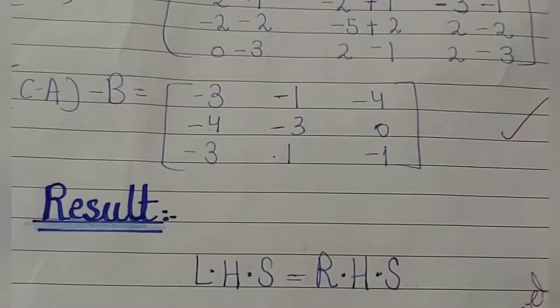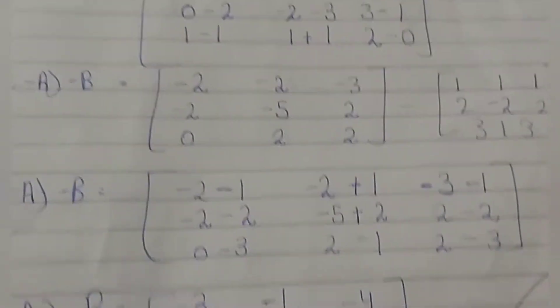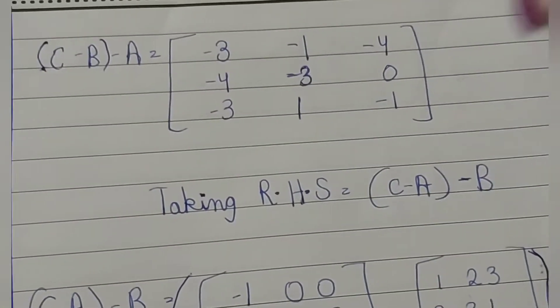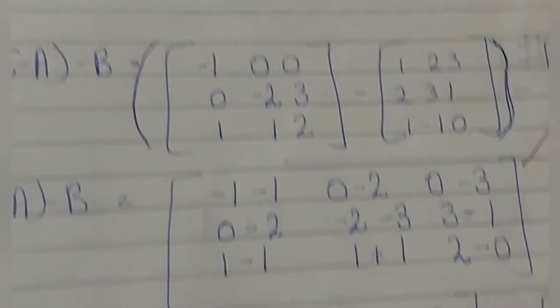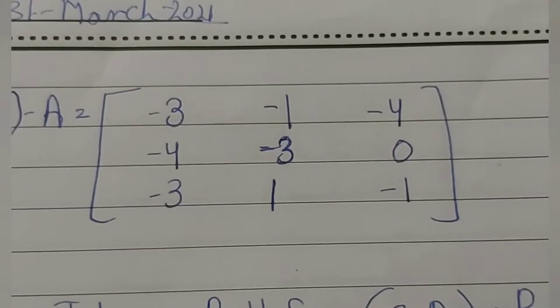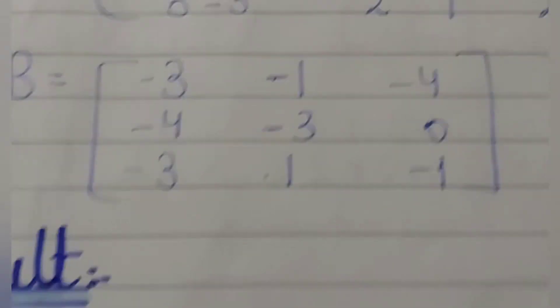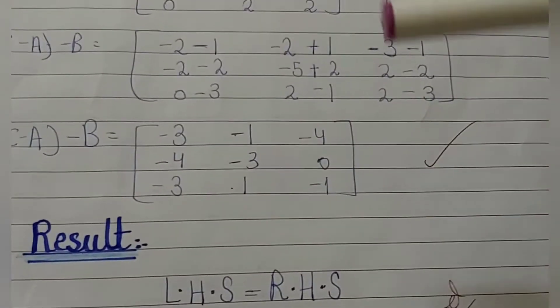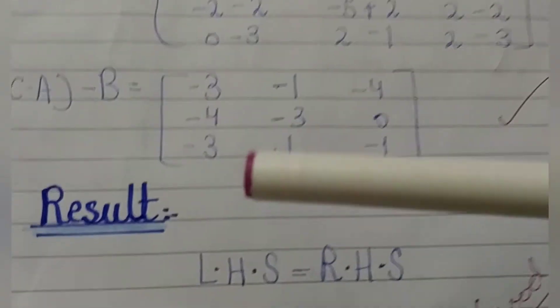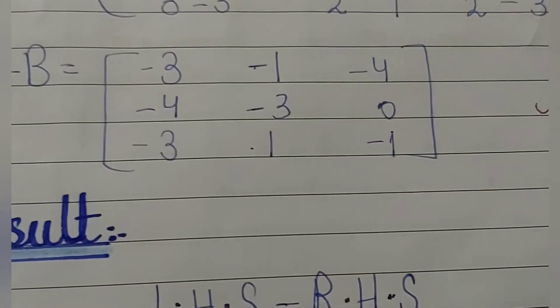We have solved both left hand side and right hand side. Left hand side solution: minus 3, minus 1, minus 4. Right hand side answer: minus 3, minus 1, minus 4. The first row is the same, the second row: 4, minus 3, 0, minus 4, 0 — same. Minus 3, 1, 1, minus 3, 1, minus 2. Left hand side is equal to right hand side. This was question number 7 solved.